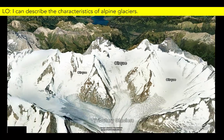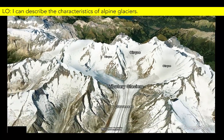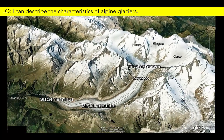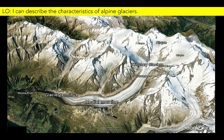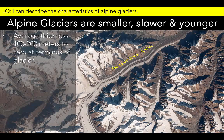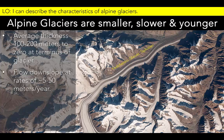Drawing back, we can see the full extent of the glacier, from its beginnings in the high cirques to its terminus 24 kilometers further down the valley. Alpine glaciers are much shorter and thinner than ice sheets. They tend to move more slowly, and the age of the ice flowing through these glaciers is more likely to be measured in hundreds of years, rather than hundreds of thousands.